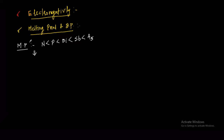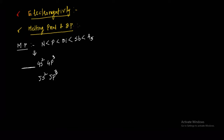Antimony and bismuth form three covalent bonds instead of five covalent bonds. We know that as the number of covalent bonds increases, melting point increases. In the case of antimony and bismuth, the inert pair effect is applied. The outermost electronic configuration can be written as 4s² 4p³ or 5s² 5p³.